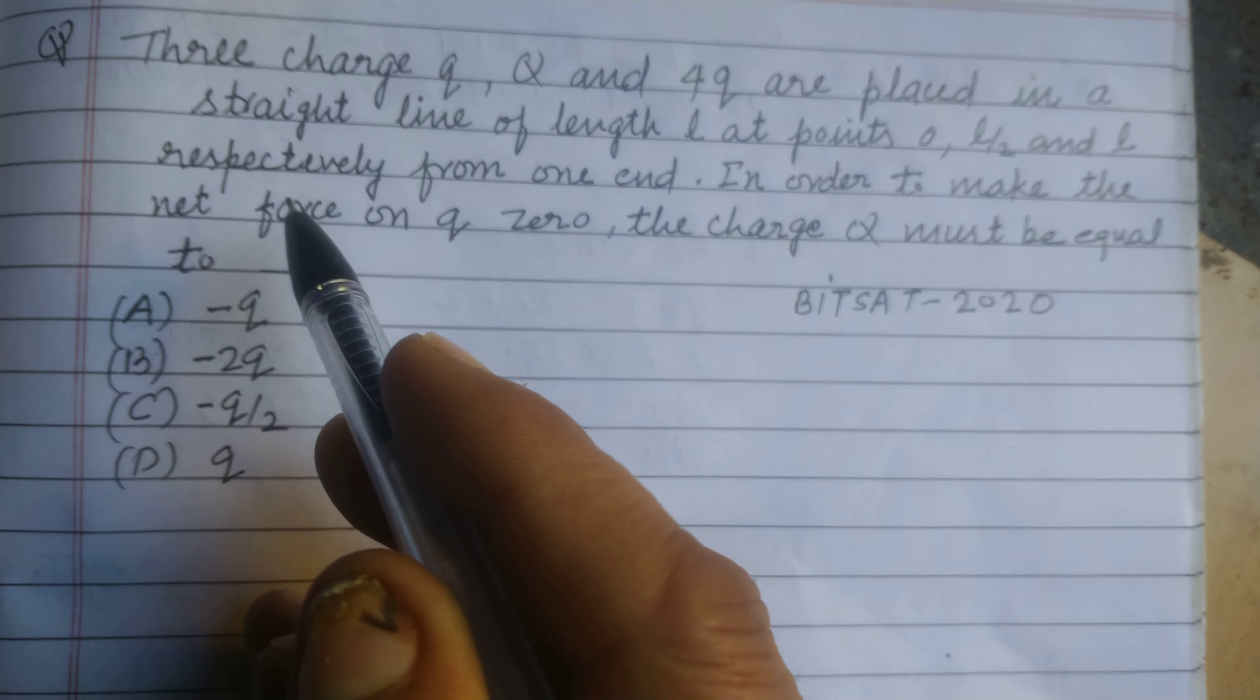First we make the figure. Q and 4Q are placed at a distance 0 from this point and L. Distance between Q and Q is L/2, and distance between Q and 4Q is also L/2. The distance between Q and 4Q is L.